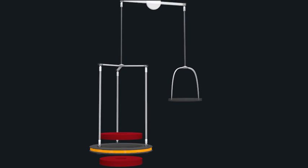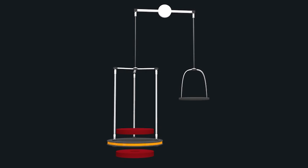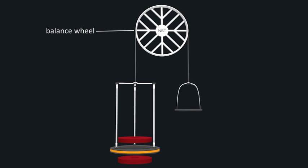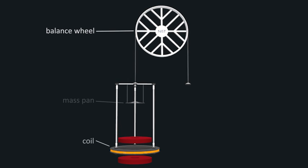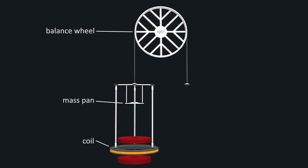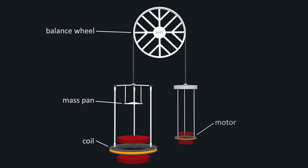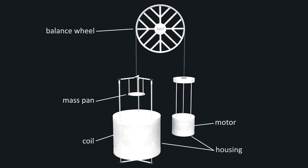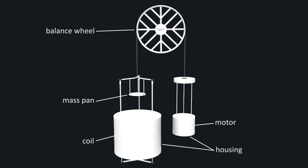NIST's new watt balance uses a wheel instead of a balance beam. Attached to the wheel on one side is the coil and a platform for the test mass. On the other side is the motor that moves the coil in velocity mode. Both the coil and the motor are surrounded by metal enclosures.